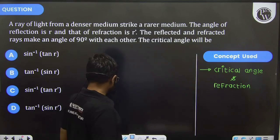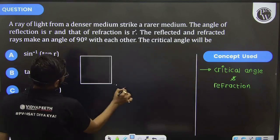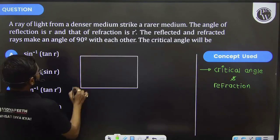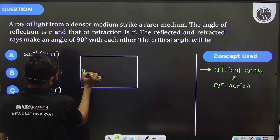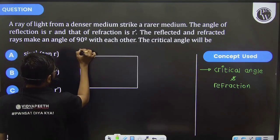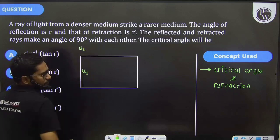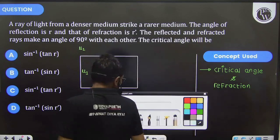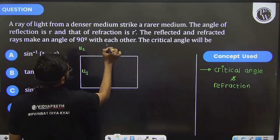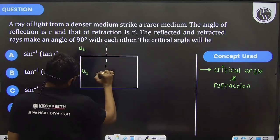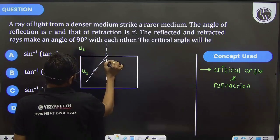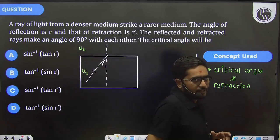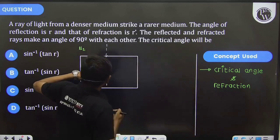Let's understand. This is our denser medium having the refractive index μ1, and the rarer medium having the refractive index μ2. Now, the light strikes from the denser medium.